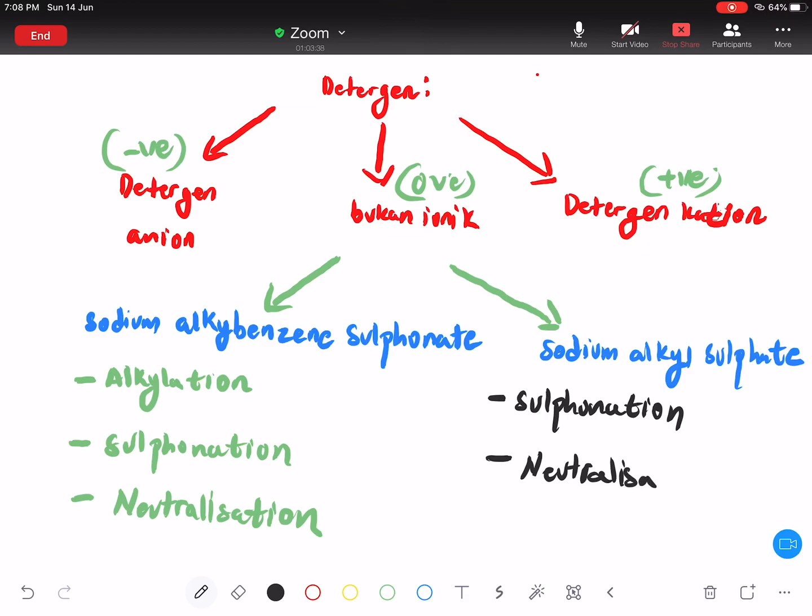Wait, guys. Korang tahu tak apa tu sulfonation? Sulfonation maksudnya you tambah H2SO4, sulfuric acid. Jadi neutralization mestilah tambah lawan acid. Apa lawan acid? Neutralization, tambah apa? NaOH.